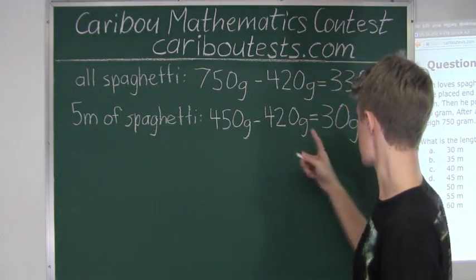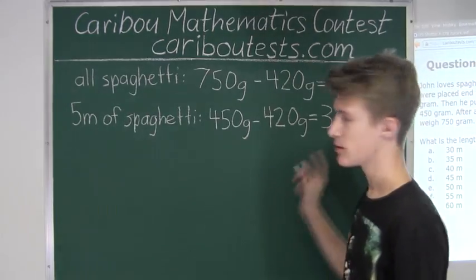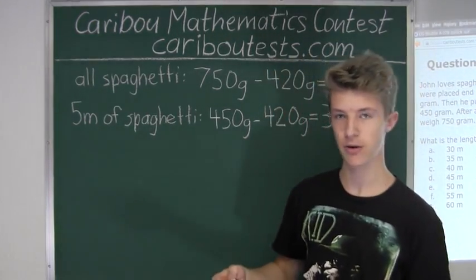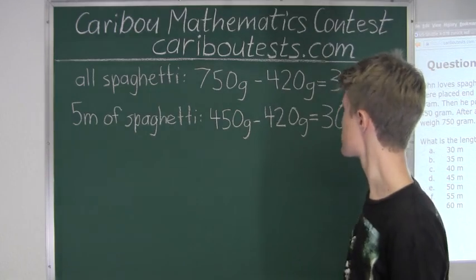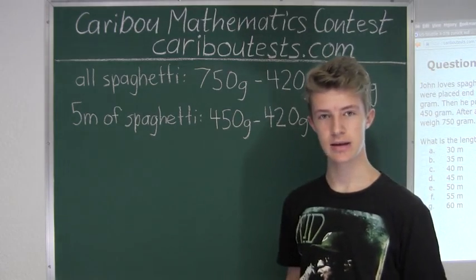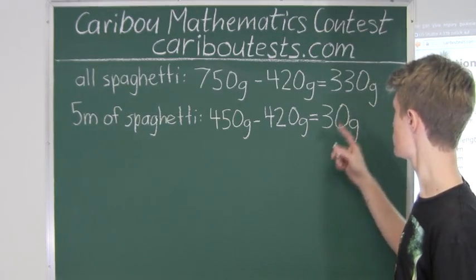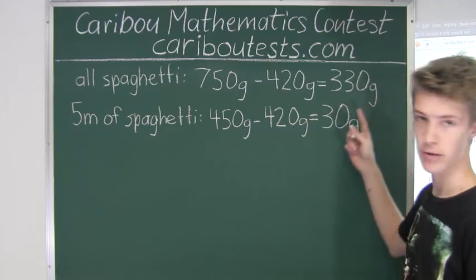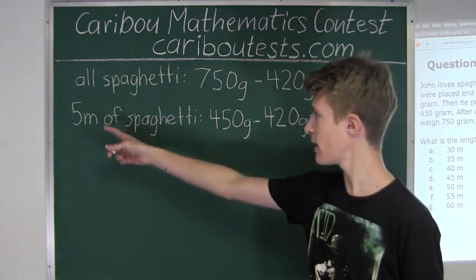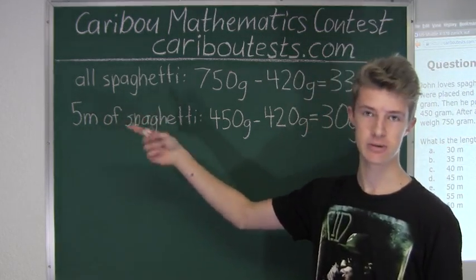So we know that 5 meters of spaghetti is 30 grams, but we want to find the length of all the spaghetti. So now we need to see how many times 30 grams goes into 330 grams, so that we can multiply that number by 5 and see what the length of all the spaghetti is.